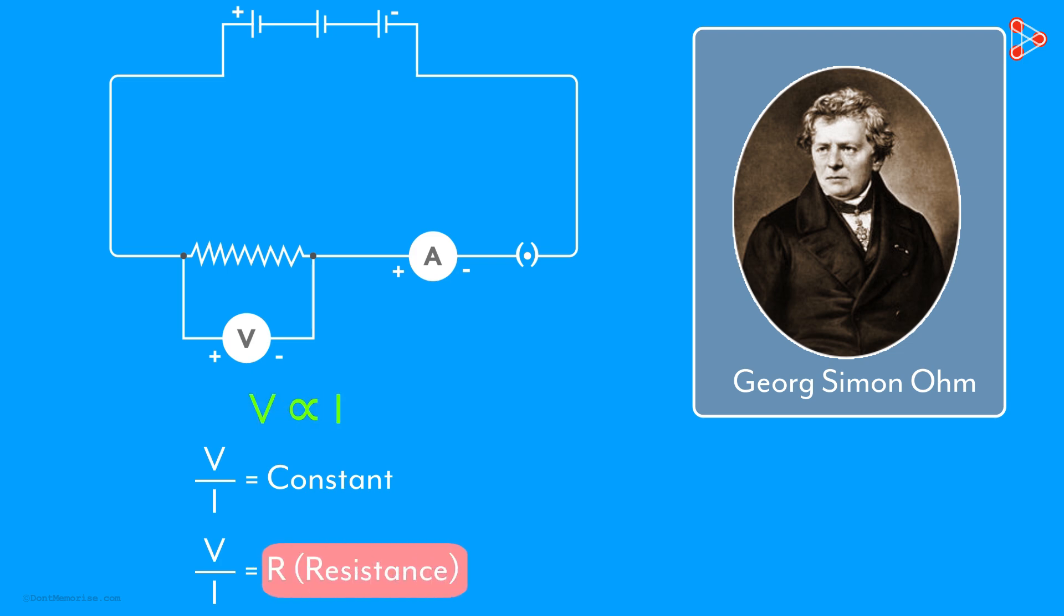What is resistance? It is simply the property of a conductor to resist the flow of charges through it. Here in this experiment, it was constant.